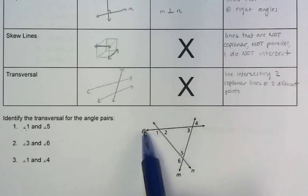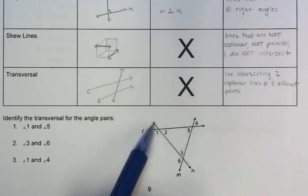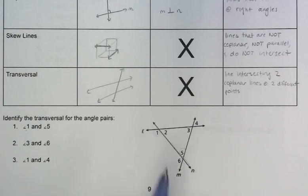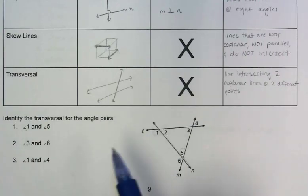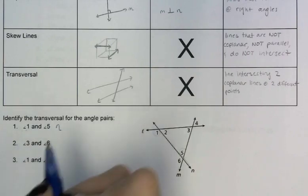The reason is: here's my two other lines, L and M, and N is intersecting them at two different points. So N is the transversal that goes with this pair of angles.